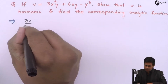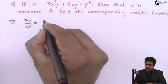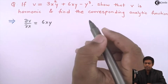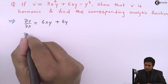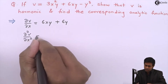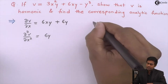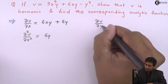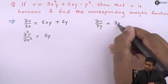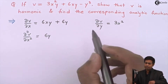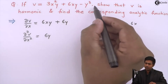Partially differentiating v with respect to x: ∂v/∂x = 6xy + 6y. Then ∂²v/∂x² = 6y. Next, differentiating v with respect to y: ∂v/∂y = 3x² + 6x − 3y².